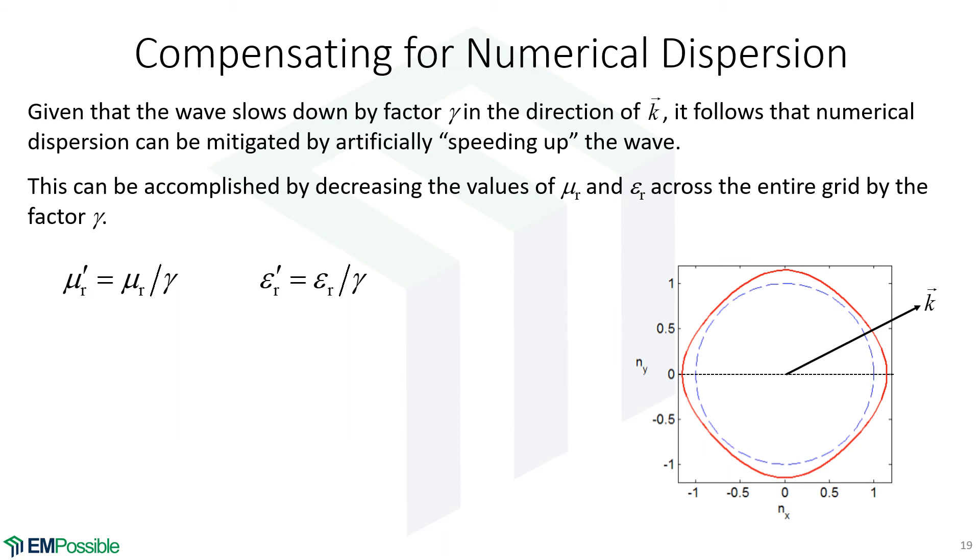So how do we actually compensate? We will set up our grid, get ready to simulate, and right before we're ready to simulate, what we'll do is we will look at our permeability and divide by this compensation factor. We will look at our permittivity and divide by the compensation factor, and we will come out with new relative permeability and relative permittivity, and we actually use these on the grid. So we lower the permeability and permittivity across the entire grid that artificially speeds up the wave, and if we've calculated this compensation factor correctly, then we artificially speed up the wave to just the right amount that it travels exactly at the speed of light across our Yee grid.